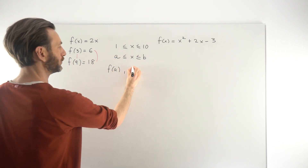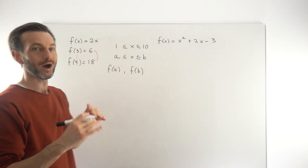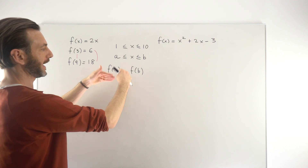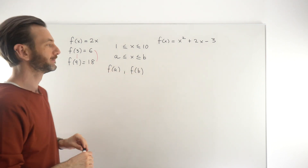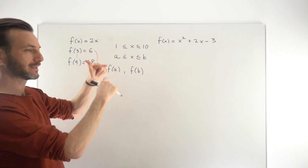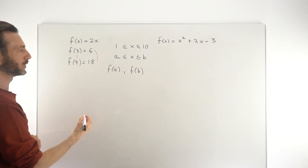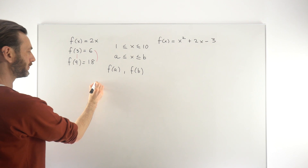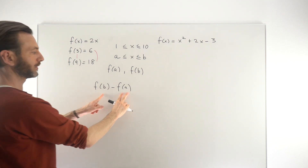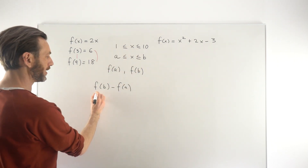We do the same for f of b. Remember that these output values, f of a and f of b, are just the y-values on the graph of the function, while a and b are the x-values. So effectively what we're doing is comparing the difference in the height — the y-values — versus the difference in the horizontal change, the x-values. The formula is just f of b minus f of a, capturing the difference between the function values, which is the difference in the vertical aspect of the graph.